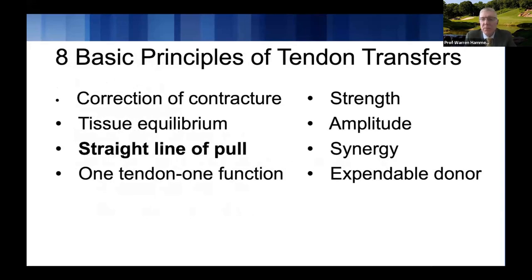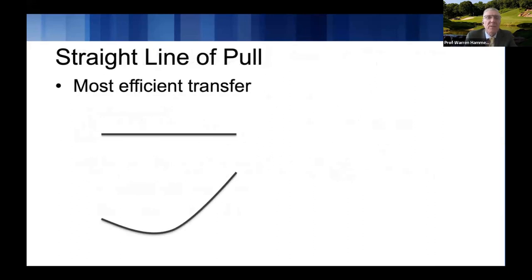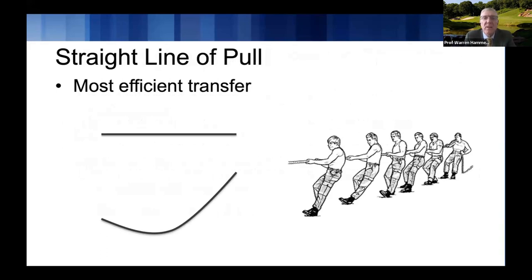The straight line of pull becomes pretty obvious when you think about it. If you're pulling on a cord, a straight pull gives far better mechanical advantage than an angled one — like in tug of war, where you're always pulling in a straight line. You want to release any tethers proximally so that the tendon is going in the appropriate direction before setting your tension and performing your tenorrhaphy.